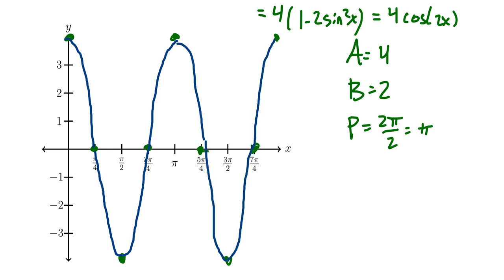Carrying through like that, we have the complete graph of y = 4 - 8sin²(x), which was equivalent to graphing y = 4cos(2x).